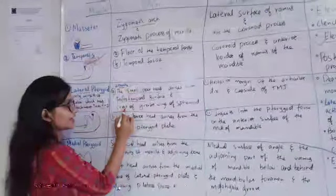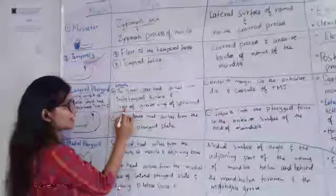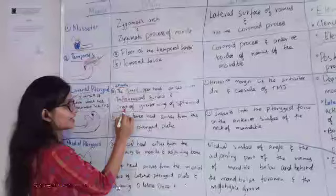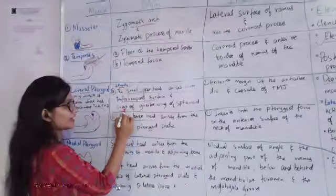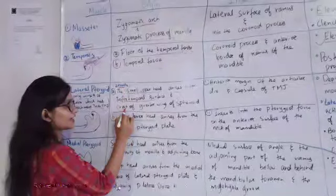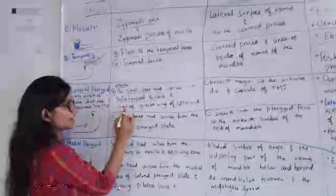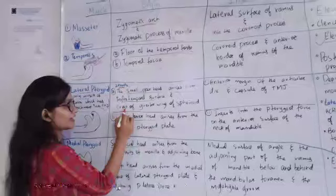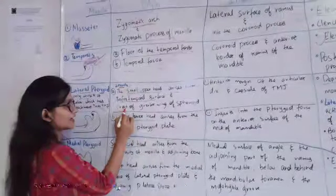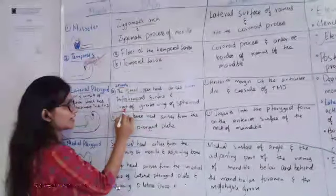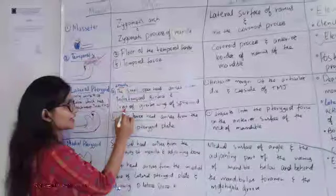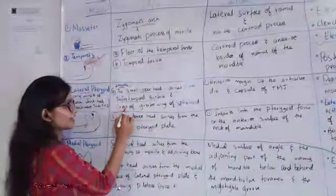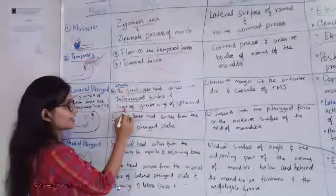The last one is the Medial Pterygoid muscle. Medial Pterygoid. It has a superficial head which originates from the tuberosity of the maxilla and the adjoining palatine bones. The deep head arises from the medial surface of the lateral pterygoid plate, which is again a part of the sphenoid bone, and the adjoining palatine bones.